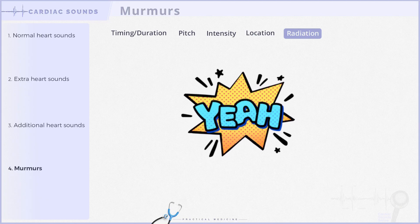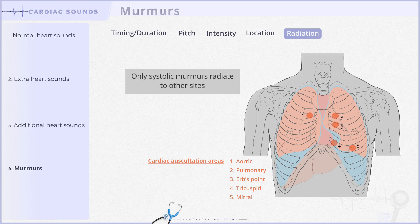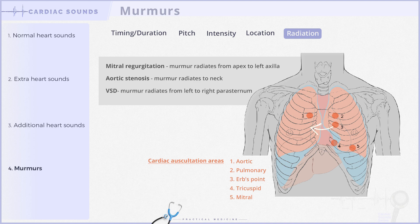This brings us to the last feature: the radiation of the murmur. Only systolic murmurs exhibit radiation, flowing in the direction of blood across the valve. Mitral regurgitation murmurs spread from the apex to the left axilla. Aortic stenosis murmurs extend from the right second intercostal space to the neck. And lastly, VSD murmurs travel from the left sternal edge to the right side of the sternum.